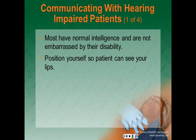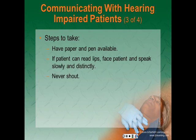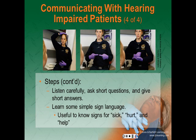Hearing impaired patients give us a special challenge. Most people with hearing impairments have normal intelligence and are not embarrassed by their disability. You should position yourself so that the patient can see your lips — many times they can read lips, or the augmentation of lip reading and seeing what you're saying helps them understand. If patients have hearing aids, be careful that they are not lost during an accident or fall, and ask the family if the patient uses hearing aids. Steps to effectively communicate with hearing impaired patients: have paper and pen available; if the patient can read lips, face them and speak slowly and distinctly; never shout or raise your voice; listen carefully; ask short questions and give short answers; and learn some simple phrases in sign language — useful to know signs for sick, hurt, and help.